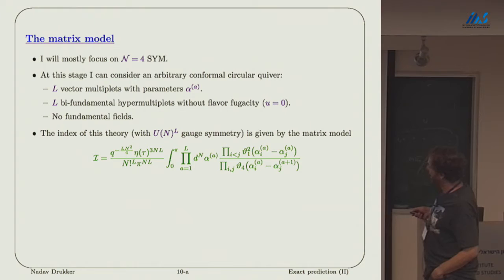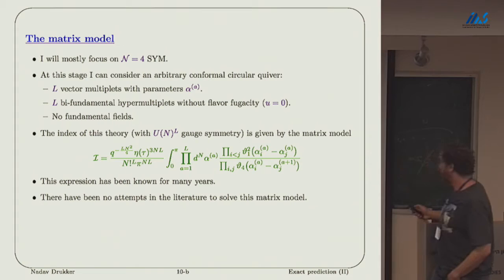We have some results for flavor fugacities, but in this talk I will set them to zero. There are no fundamental fields. This is the matrix model. There is some pre-factor. Then we have L n-dimensional integrals over these eigenvalues alpha A, which are compact, going from zero to pi. In the numerator, we have some kind of elliptic Vandermonde for each of those nodes A. In the denominator, we have a coupling of eigenvalues of node A to the eigenvalues A plus 1.